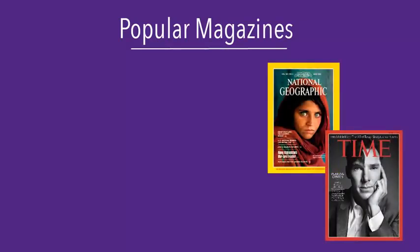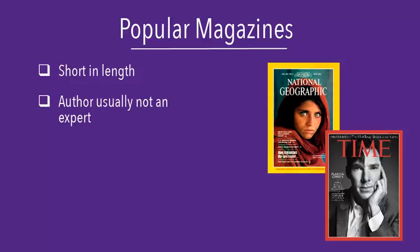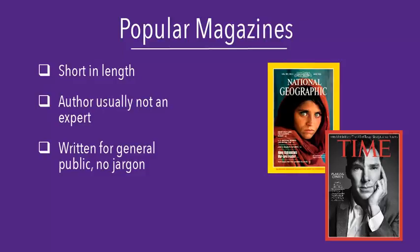Popular magazine articles are usually fairly short. You won't always find the name of the author listed, and the author of the article is not necessarily an expert on the topic being discussed. Popular magazine articles are written for the general public and don't contain a lot of technical language. You also won't find a list of citations at the end of these articles.